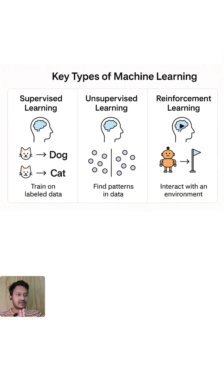So in machine learning, there are three key types of machine learning. One is supervised learning. The other one is unsupervised learning. And the third one is reinforcement learning.